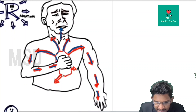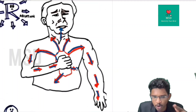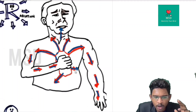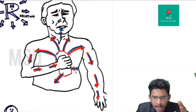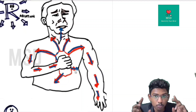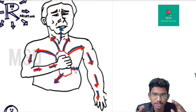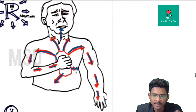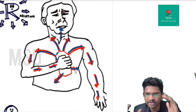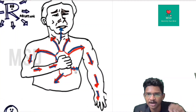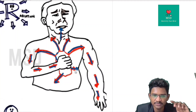Braunwald's textbook states that chest pain radiating to both arms and both shoulders is more characteristic of MI than chest pain radiating only to the left hand and left arm.